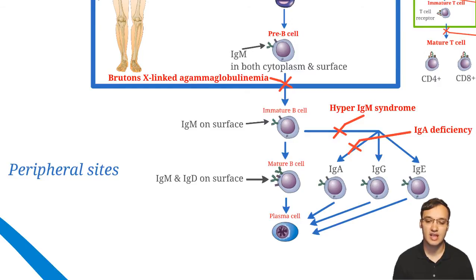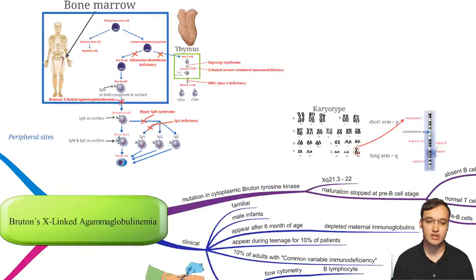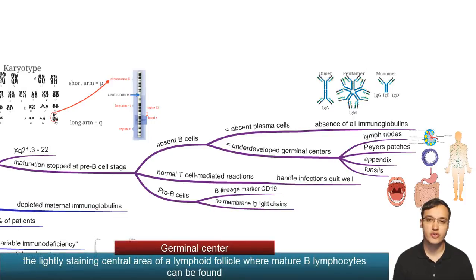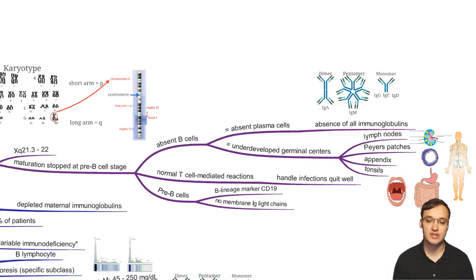Without any plasma cells, there are no immunoglobulins. We have absent B cells, absent plasma cells, and absence of all immunoglobulins — IgA, IgM, IgG, IgE, IgD. In the germinal centers, where B cells are usually found, these will be underdeveloped since we don't have any B cells.